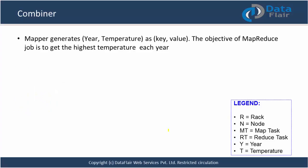Now let's understand combiner with one example. We have an example where the mapper will generate year and temperature as key and value. The objective of the MapReduce job is to get the highest temperature per year - like in 1940, what is the highest temperature; in 1970, what is the highest temperature. So the mapper will simply be passing year and temperature as output.